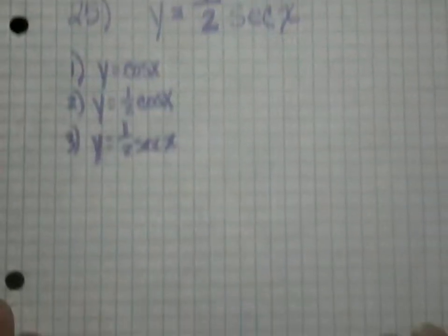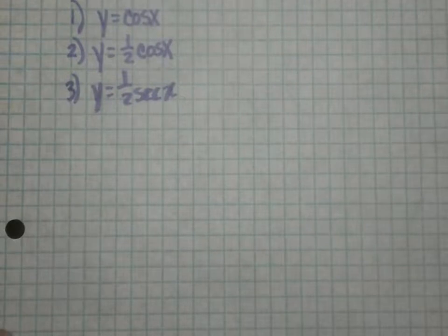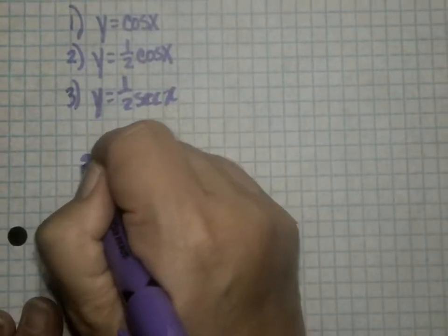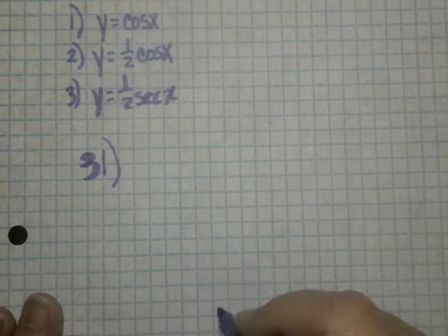All right, just kind of set that one to the side for a minute, maybe on the back of your paper or another sheet. Another one from that worksheet we're going to look at is number 31.